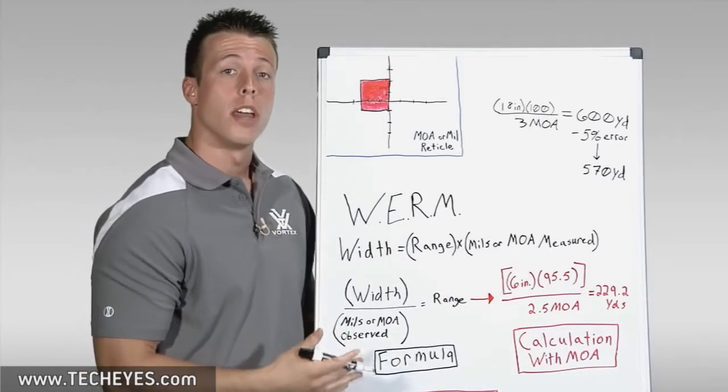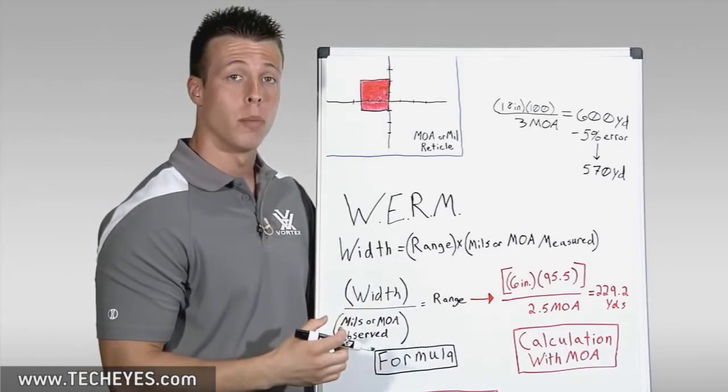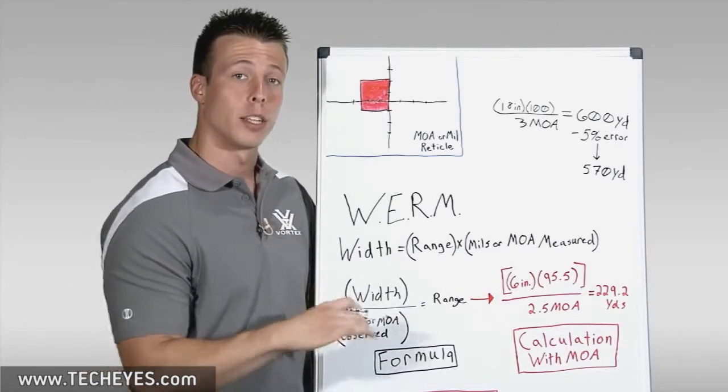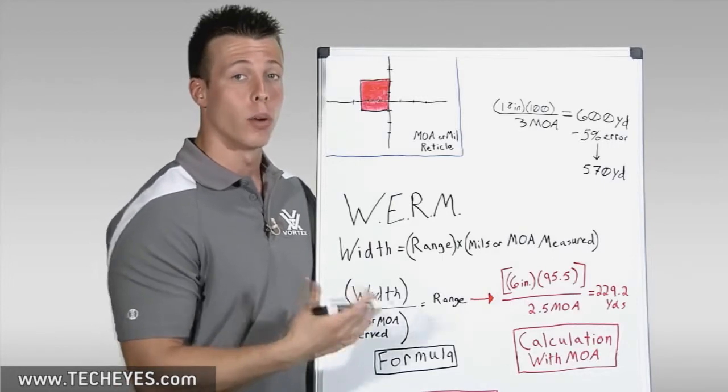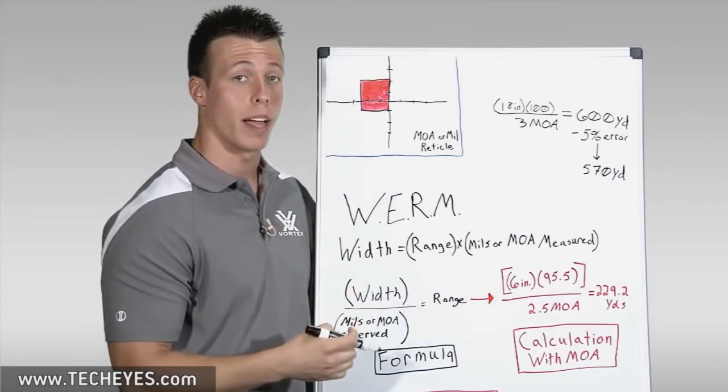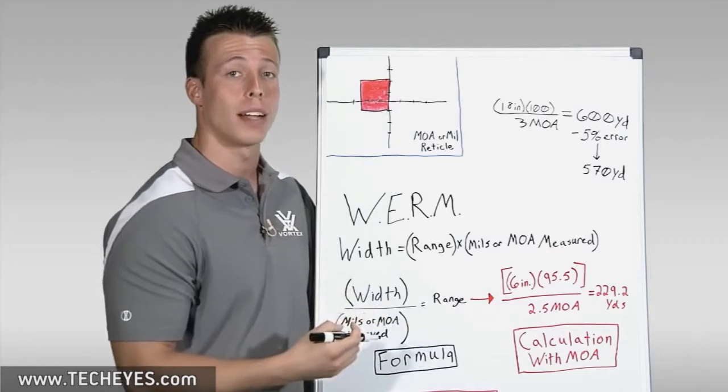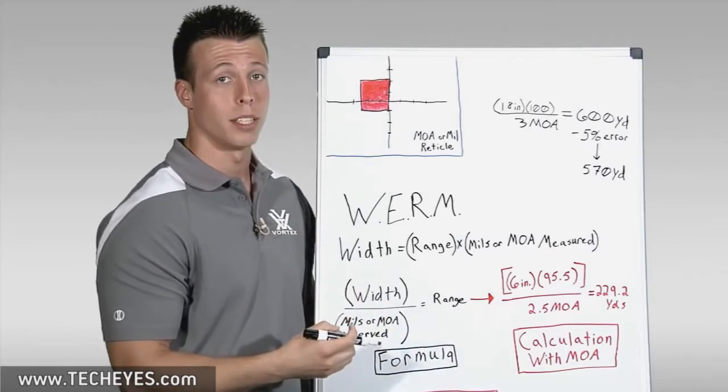Now be careful of those subtensions. If you're using a second focal plane riflescope, you will need to have the riflescope set to the proper magnification setting in order to ensure that your subtensions are correct. If the subtensions are not correct, this will skew your range estimation.